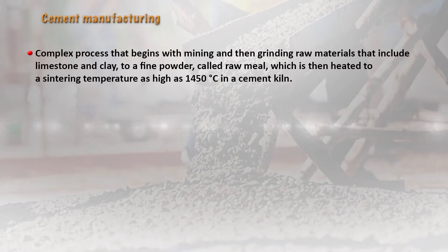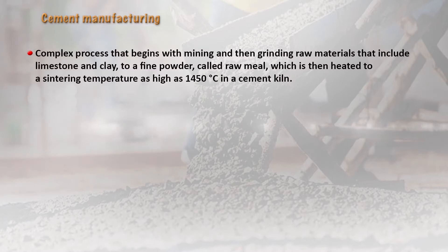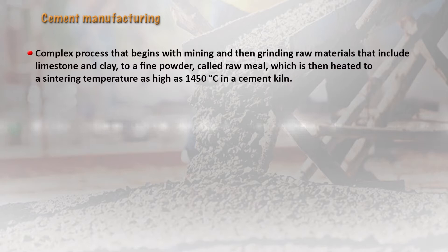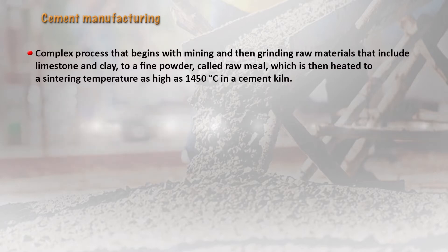Let us understand the cement manufacturing process. Cement is whitish, grayish, or greenish in color. It is a complex process that first begins with mining, followed by grinding of the raw material — including limestone and clay — into a fine powder referred to as a raw meal. This is then heated to a sintering temperature as high as 1450 degrees centigrade in a cement kiln.